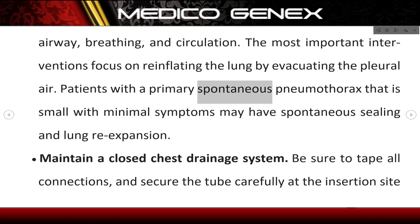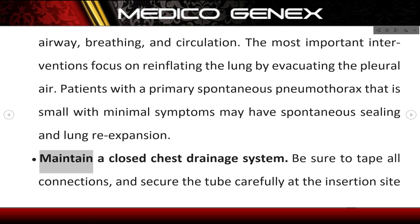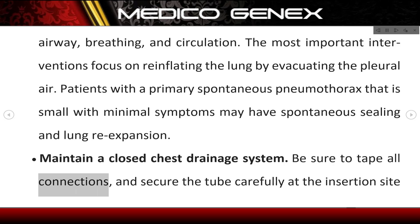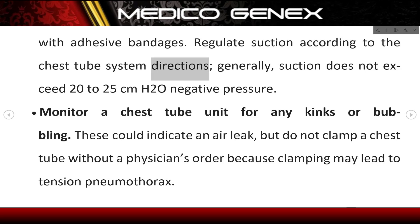Patients with a primary spontaneous pneumothorax that is small with minimal symptoms may have spontaneous sealing and lung re-expansion. Maintain a closed chest drainage system; be sure to tape all connections and secure the tube carefully at the insertion site with adhesive bandages. Regulate suction according to the chest tube system directions.